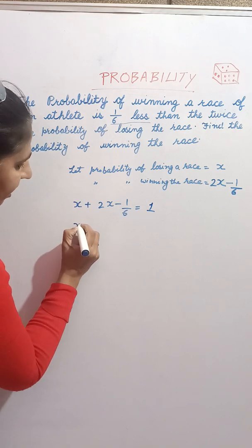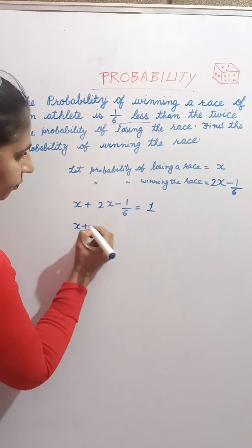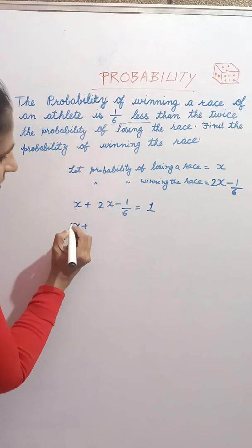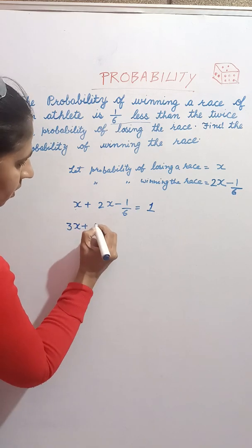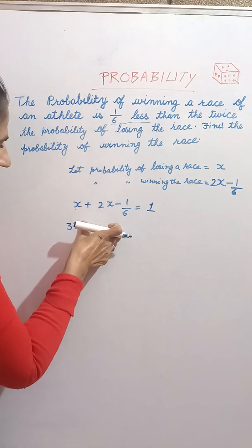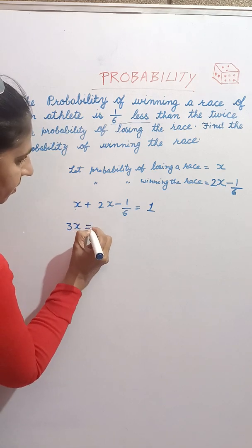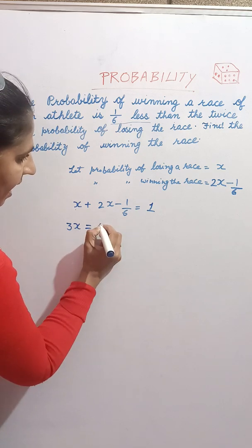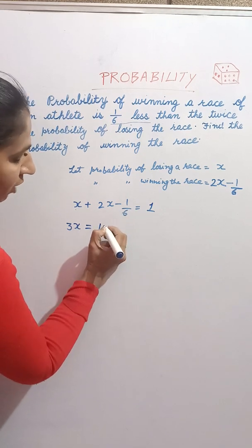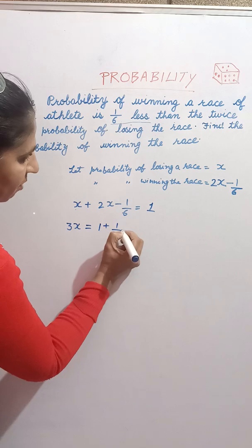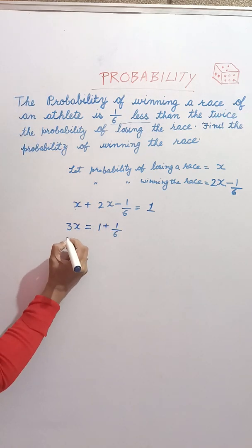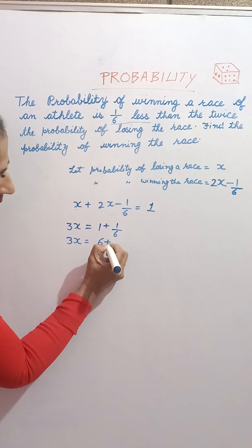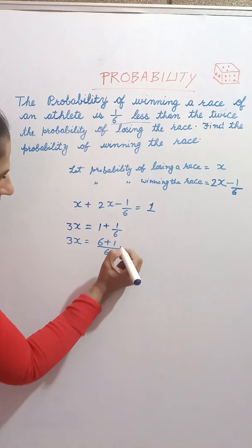Now we find the value of x. 2x plus x gives us 3x. The minus 1 by 6 moves to the other side, becoming 1 plus 1 by 6. So 3x equals 6 plus 1 over 6, which is 7 by 6, giving x equals 7 by 18.